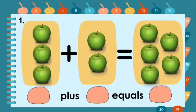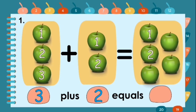Let's proceed to number one. Let's count the apples: one, two, three — three apples. Plus one, two — two apples. Equals. Let's count: one, two, three, four, five. Three plus two equals five.